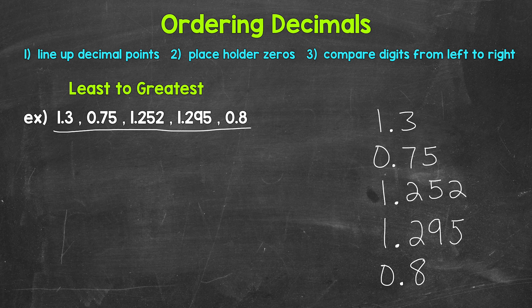Now this does look a little off since we have numbers going to different places. So what we can do, we can use placeholder zeros. Remember, zeros to the right of decimal digits do not change the value of the decimal. It gives us an equivalent decimal.